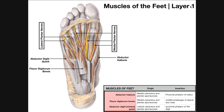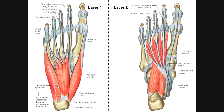Now let's go to layer two of the foot. To do that, we're going to have to remove — or reflect — these three muscles: abductor hallucis, abductor digiti quinti, and flexor digitorum brevis. Here's layer one again. You can see abductor hallucis inserting on the medial side of the proximal phalanx of the hallux, flexor digitorum brevis with four tendons extending to the middle phalanx of digits two through five, and abductor digiti quinti extending toward the proximal phalanx of digit five.